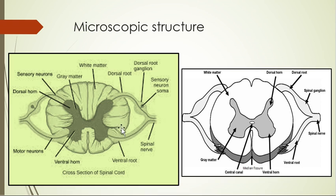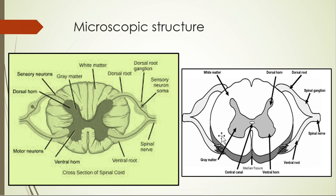There are many ascending fibers going upward and descending fibers coming downward in the white matter. Synapses occur in the gray matter area. Looking at the simplified structure: the dorsal area of gray matter is called the dorsal horn, and the dorsal area of white matter is called the dorsal column. The anterior gray matter — which is slightly wider — is called the anterior or ventral horn, and the anterior white matter is called the anterior or ventral column.